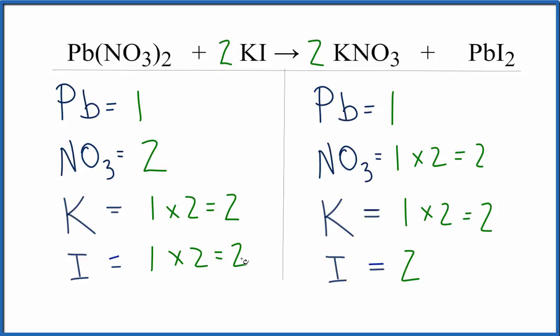And when we do that, everything on both sides of the equation is equal. So we've balanced this equation. This is Dr. B with the balanced equation for Pb(NO3)2 plus KI yields KNO3 plus PbI2. And thanks for watching.